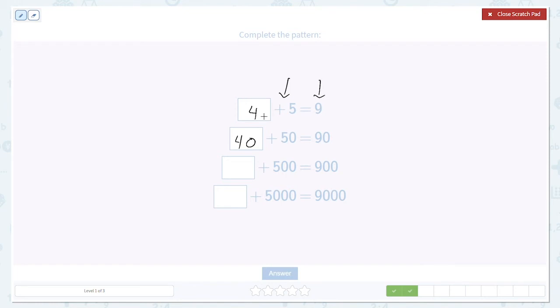Since we're adding zeros to those two parts of the sum, we must also add zeros to the 4. So we go 4, 40, then add another zero to get 400, and another zero to get 4,000. That's the pattern that we're looking for.